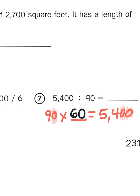So 9 with 1 zero times 6 with 1 zero gives me 54 with 2 zeros, or 90 times 60 gives me 5,400. Now I just have to reverse that: 5,400 divided into 90 groups would give me 60 in each group. That's my quotient.